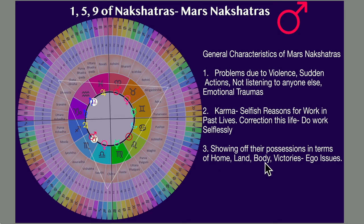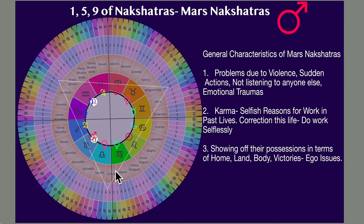All these things are related to Mars: the home, the land, the body, your physical body, how good looking I am, how many victories I have had — all ego issues. They have come to solve this. If you have Jupiter, Rahu, or Ketu in these apexes of this triangle, it's worthwhile noting that these challenges are something you need to work through — by working selflessly. You worked very selfishly in the past; time to change that. Mars will make you do that. You need to learn this from Rahu, Ketu, or Jupiter if it is sitting in this, or if there is an exchange of lordship with Mars nakshatras.